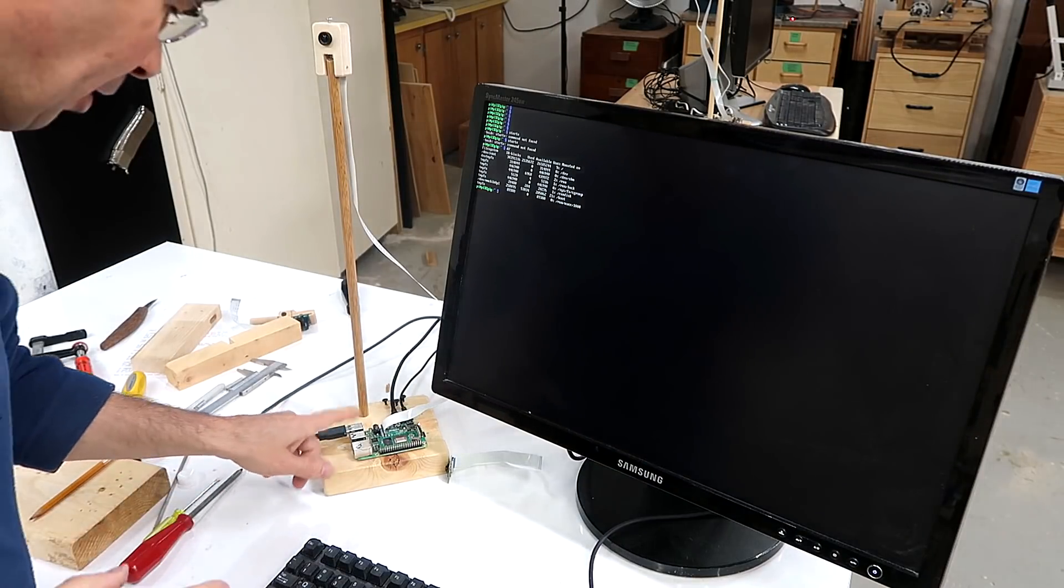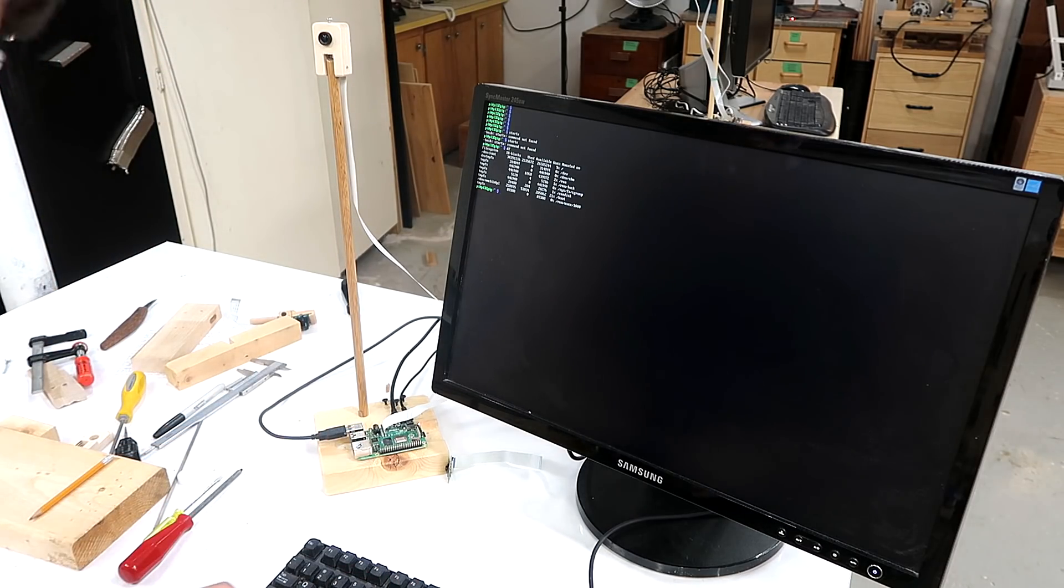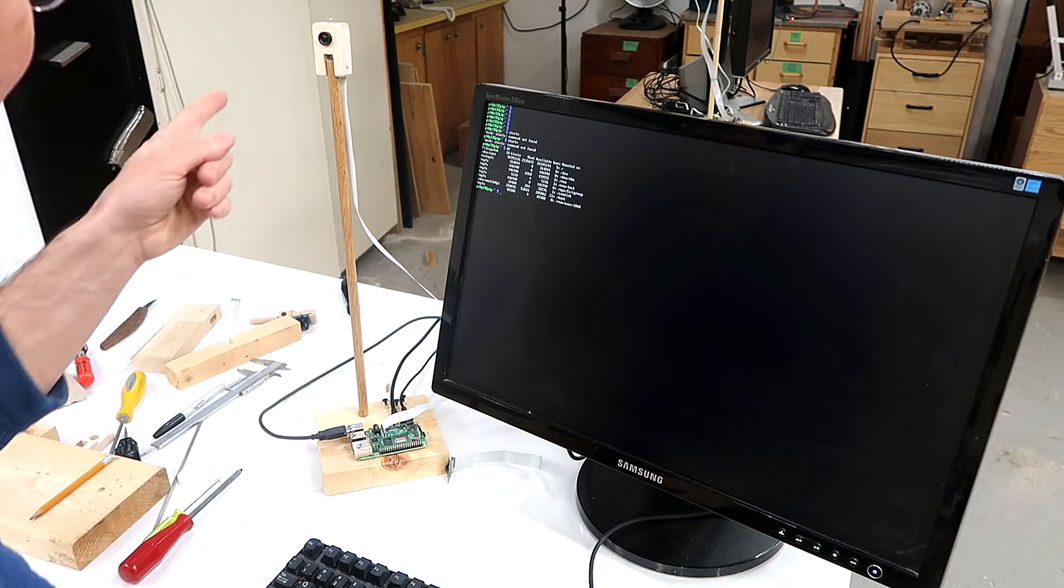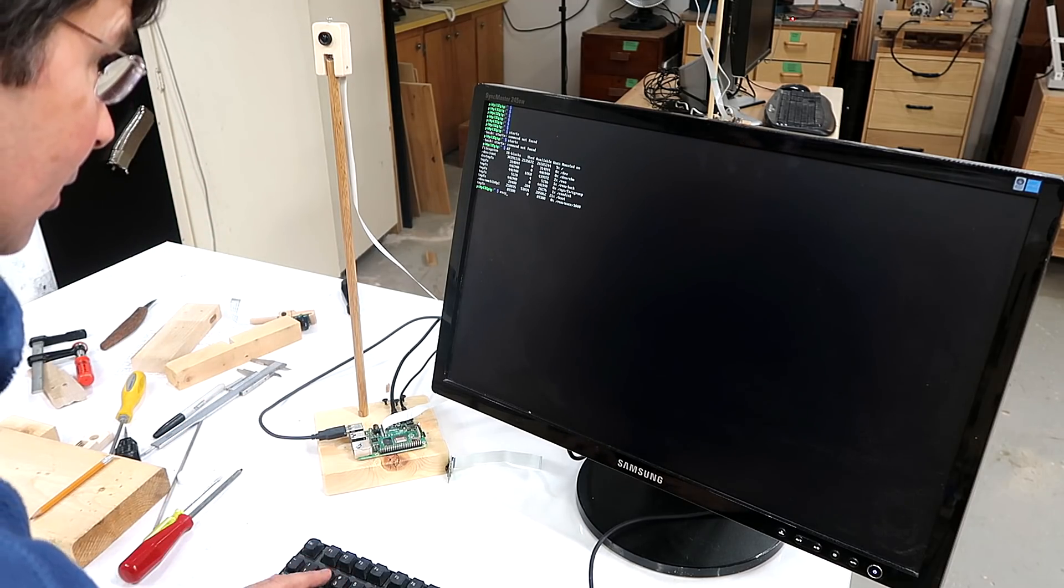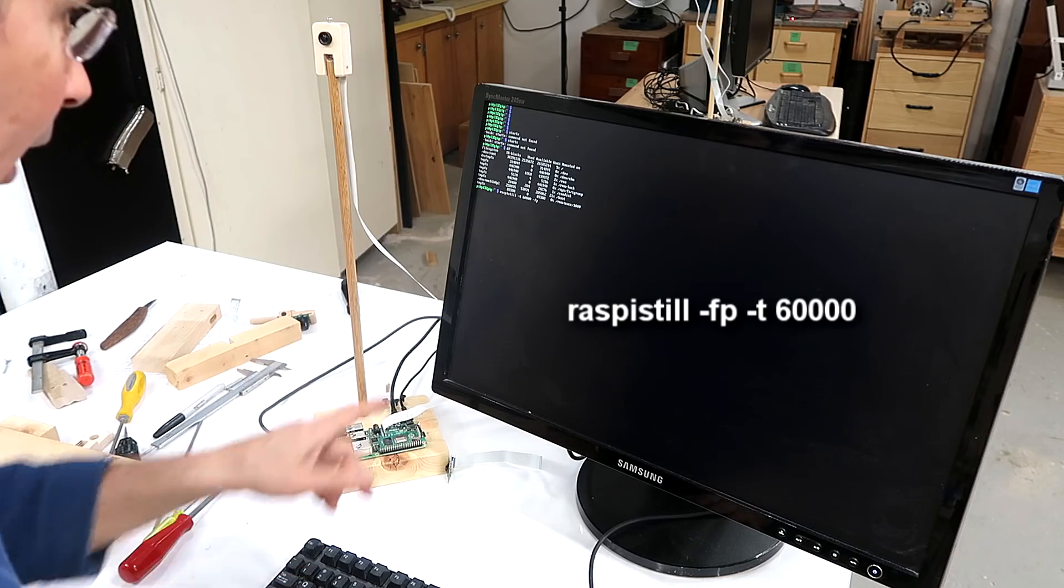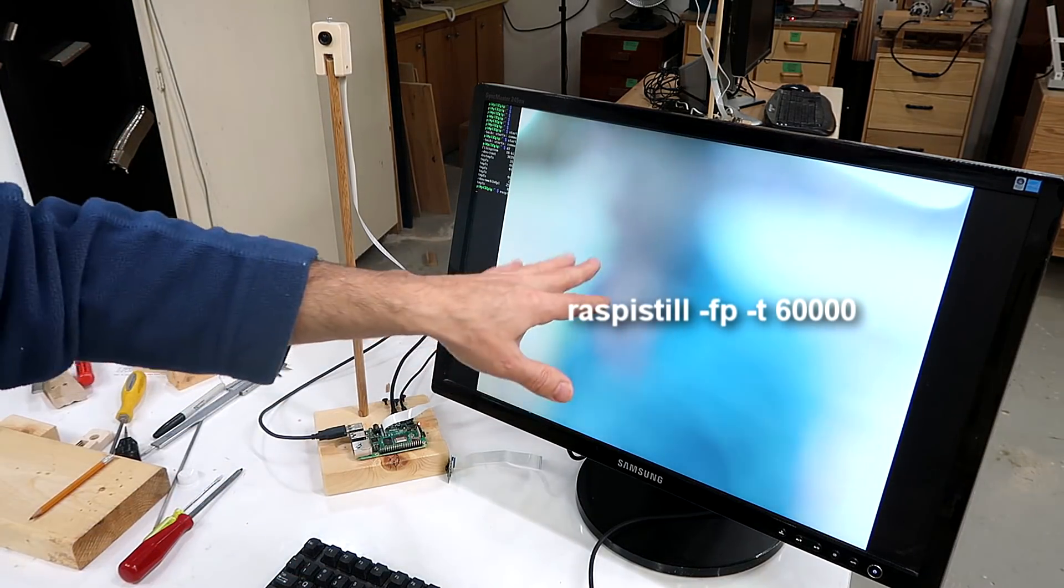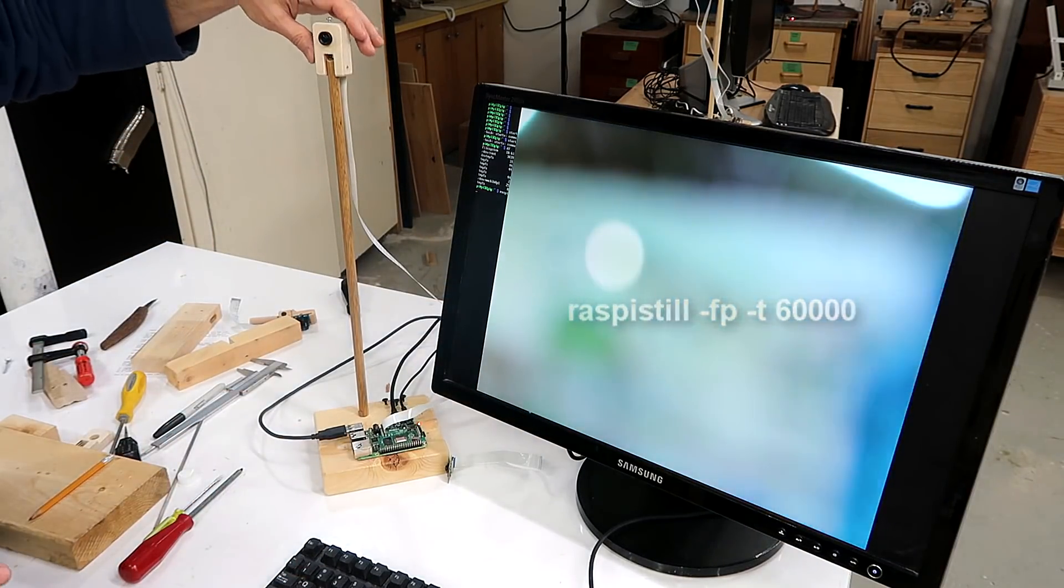The cool thing is these little Raspberry Pi computers they're about as powerful as PCs were 15 years ago. And now to try out the camera module I'll just run the command to get that. Now I'm using full preview to get full screen on there and full resolution.